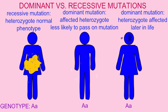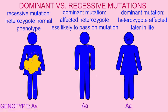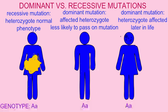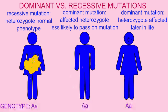And so recessive mutations are more common when they cause serious genetic disorders than dominant mutations. Those dominant mutations which are common in our population tend to affect heterozygotes later in life, after they have already passed on the gene.